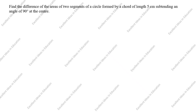Hi students, welcome to my channel, Excellent Ideas in Education. Today we are going to solve this areas related to circle problem. This is a board exam problem. Find the difference of the areas of two segments of a circle formed by a chord of length 5 centimeter subtending an angle of 90 degrees at the center.